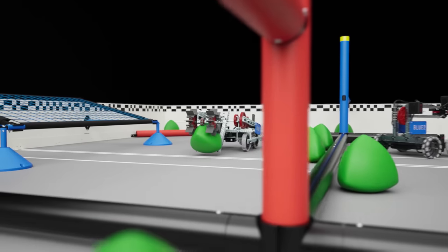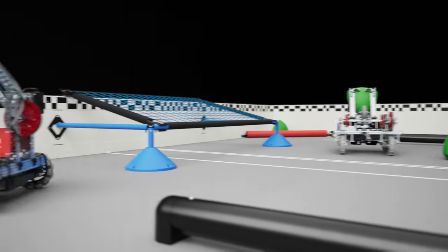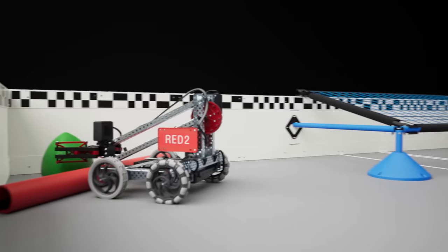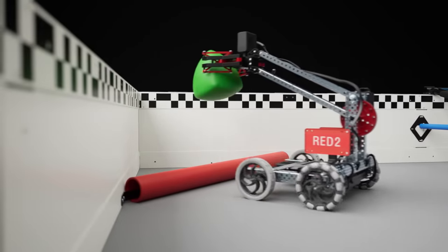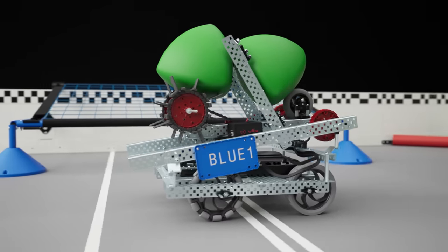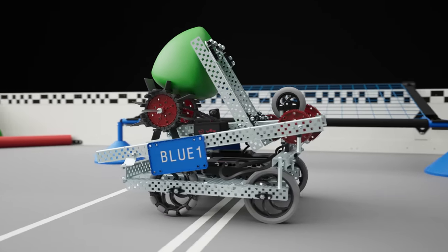Robots can pick up additional tri-balls from the field or retrieve them from match load zones that are in the far corners of the field. However, robots may only possess one tri-ball at a time.